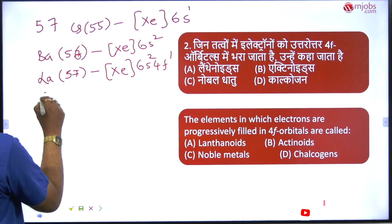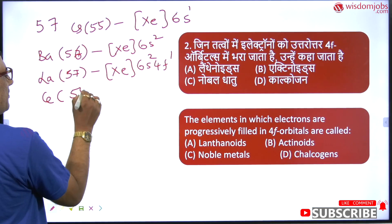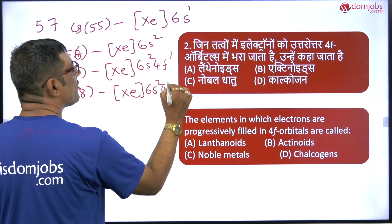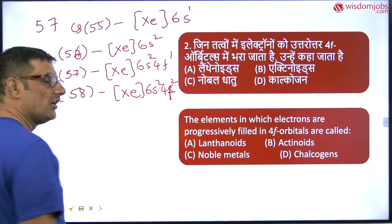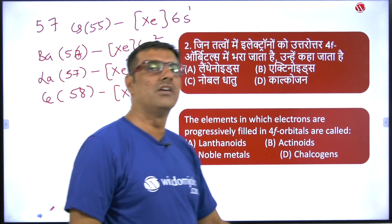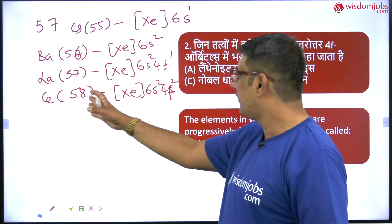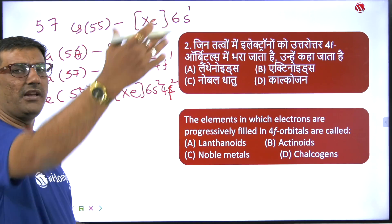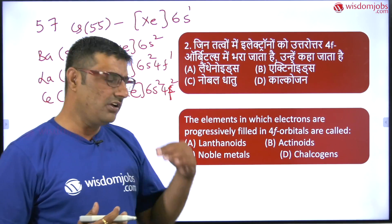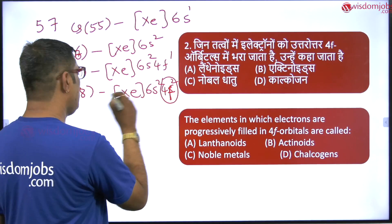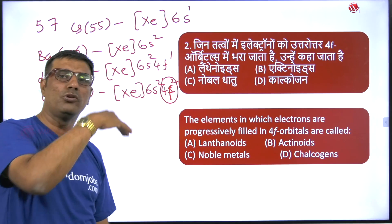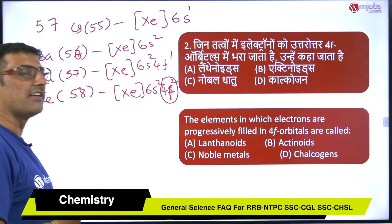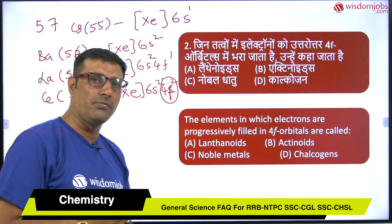Next coming to cerium, atomic number 58, its configuration is xenon core 6s2 and 4f2. Like that, if you go for the remaining elements in the lanthanide series starting from cerium to lutetium, we go from 4f2 up to 4f14. So in this way the 4f orbital is filled from cerium to lutetium, which form the lanthanide series.